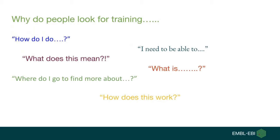The first thing to think about is why do people generally look for training. This is something we talk through as part of the train-the-trainer course. Often the people we see through EBI and Elixir colleagues need to be able to do something — for example, they have data they need to analyse fairly quickly. The questions people ask are: How do I do this? What does this mean? Where can I find more? A lot of the training is skills-based, teaching people things so they can do something they couldn't do before. This helps us start thinking about how we can design something which will really give them the skills they're looking for.